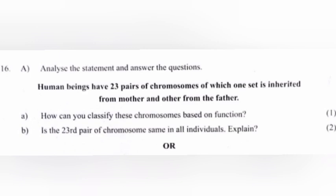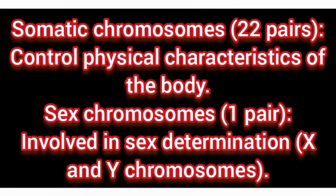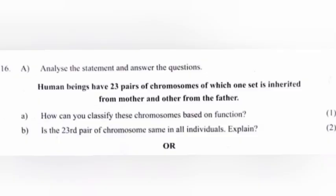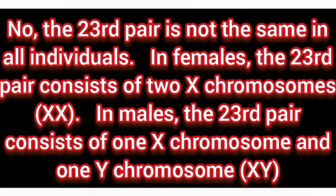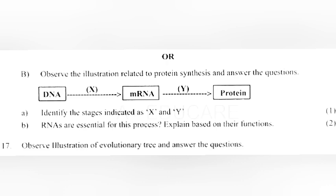Question 16A: Human beings have 23 pairs of chromosomes, of which one set is inherited from the mother and the other from the father. Part A: How can you classify these chromosomes based on their functions? Answer: Somatic chromosomes — 22 pairs, control physical characteristics of the body. Sex chromosomes — one pair, involved in sex determination: X and Y chromosomes. Part B: Is the 23rd pair of chromosomes the same in all individuals? Answer: No. In females, the 23rd pair consists of two X chromosomes (XX). In males, the 23rd pair consists of one X chromosome and one Y chromosome (XY).